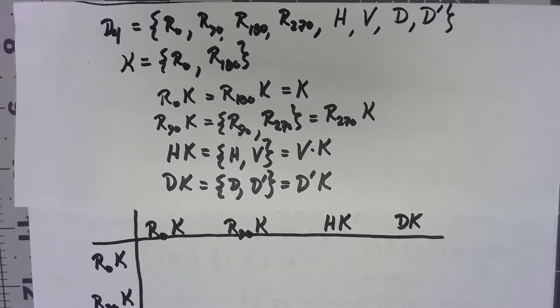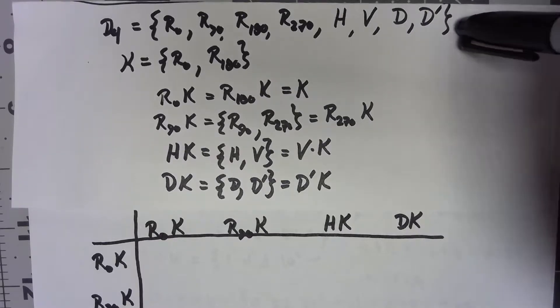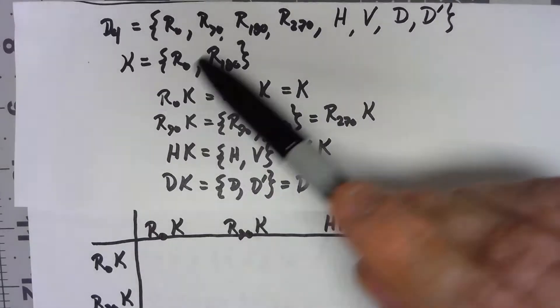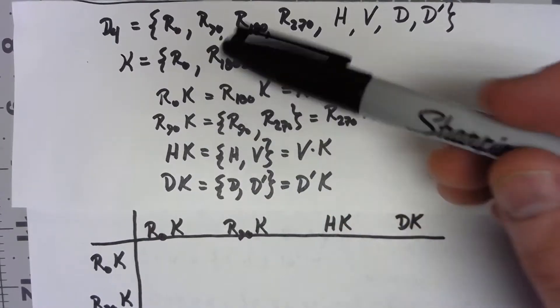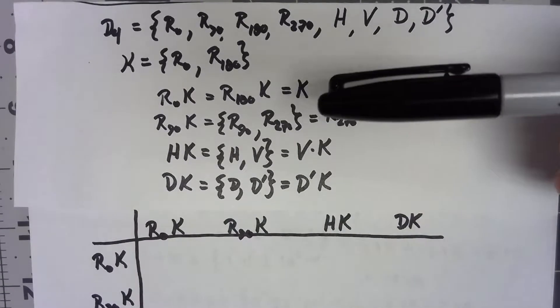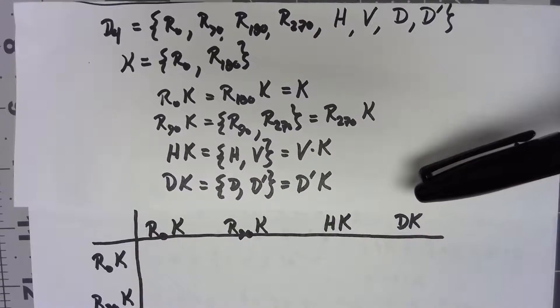Let's pick up where we left off. So we had said that for the group D4 we had a subgroup K which was the two rotations R0 and R180. That's a normal subgroup and we went through and showed that it had four different cosets.